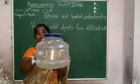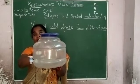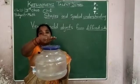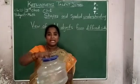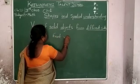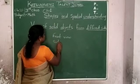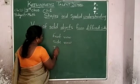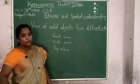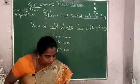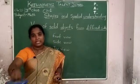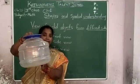Now I am seeing the front portion of the object — this is called the front view. Every object has three views. Front view means if you are standing directly in front of the object, we call it the front view.